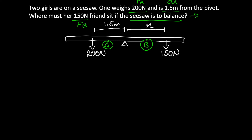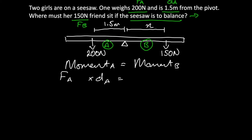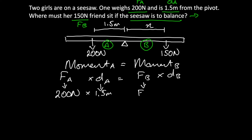As we know the principle of moments applies, let's apply it. The moment of A is equal to the moment of B. The moment is equal to force times distance, so the force of A times the distance of A is equal to the force of B times the distance of B. The force of A is 200 newtons and the distance of A is 1.5 meters. The force of B is 150 newtons and the distance of B is unknown.